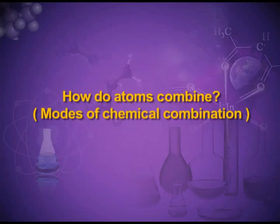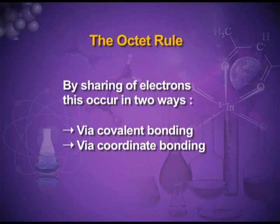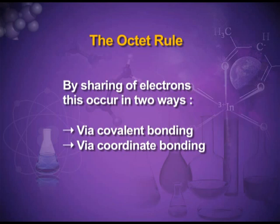How do atoms combine — that is, the mode of chemical combination? There are two modes of chemical combination. One is by complete transfer of an electron from one atom to another; that type of bond is known as an electrovalent or ionic bond. The second way is by sharing of electrons — both atoms contribute electrons, the electrons are shared, and a bond is formed. This type of bond is known as a covalent bond. There is also another type of sharing called a coordinate bond, where both electrons are contributed by only one of the atoms but shared by both.